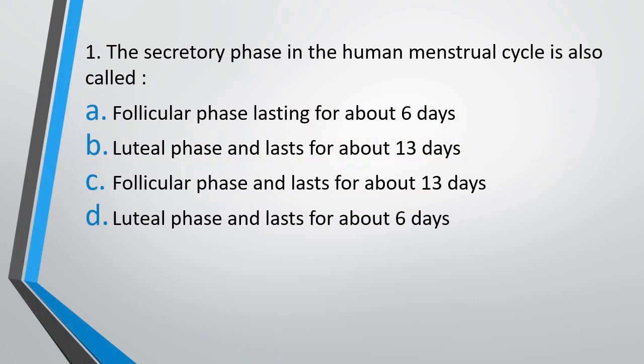Question 1. The secretory phase in the human menstrual cycle is also called: (A) follicular phase lasting about 6 days, (B) luteal phase lasting about 13 days, (C) follicular phase lasting about 13 days, or (D) luteal phase lasting about 6 days. The correct answer is option B — it is also called the luteal phase and lasts for about 13 days.